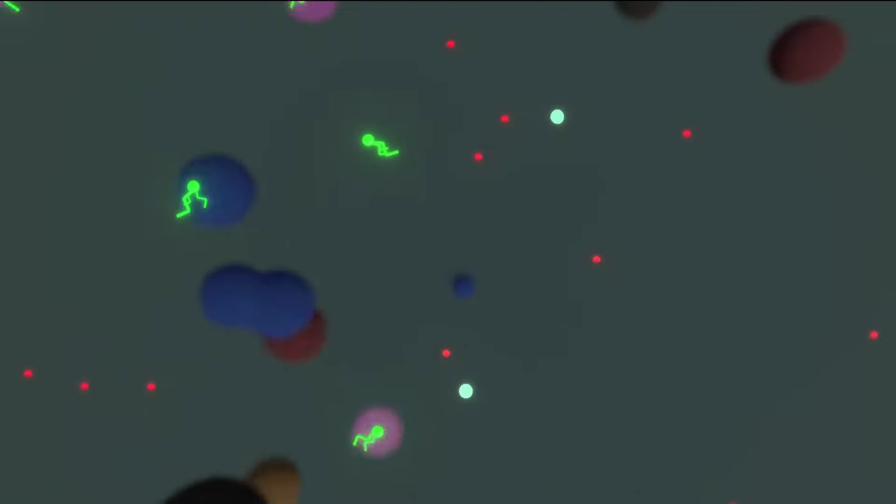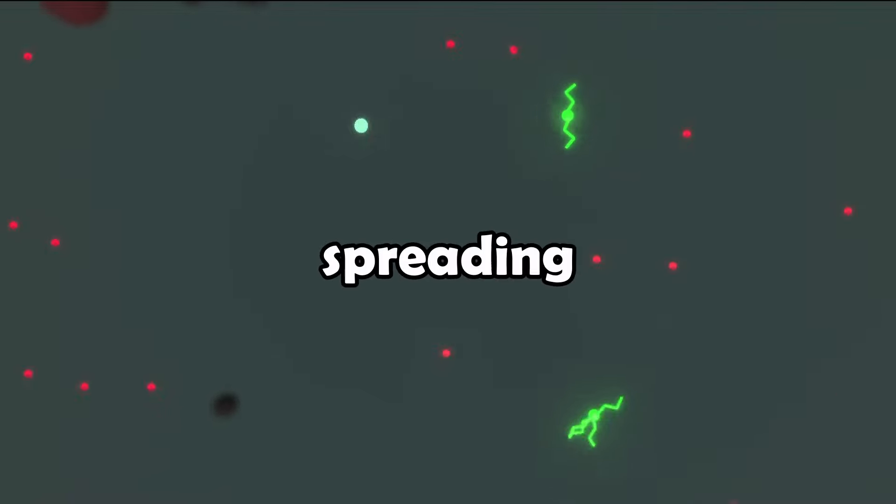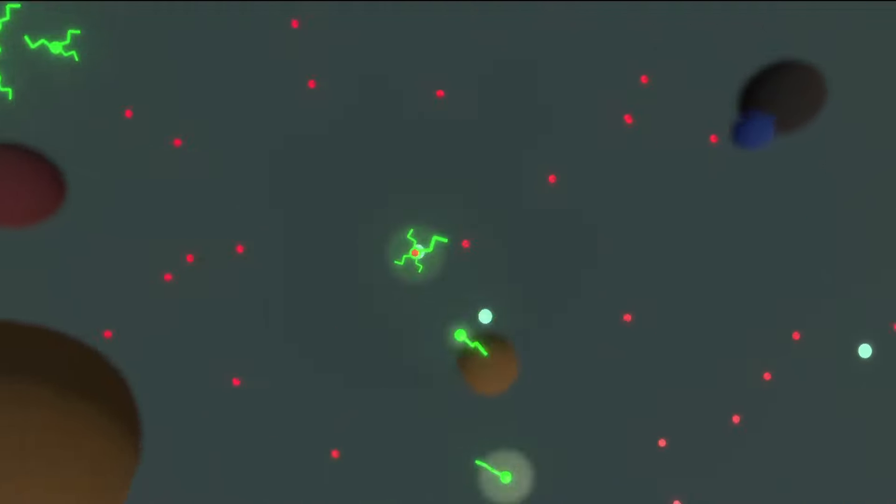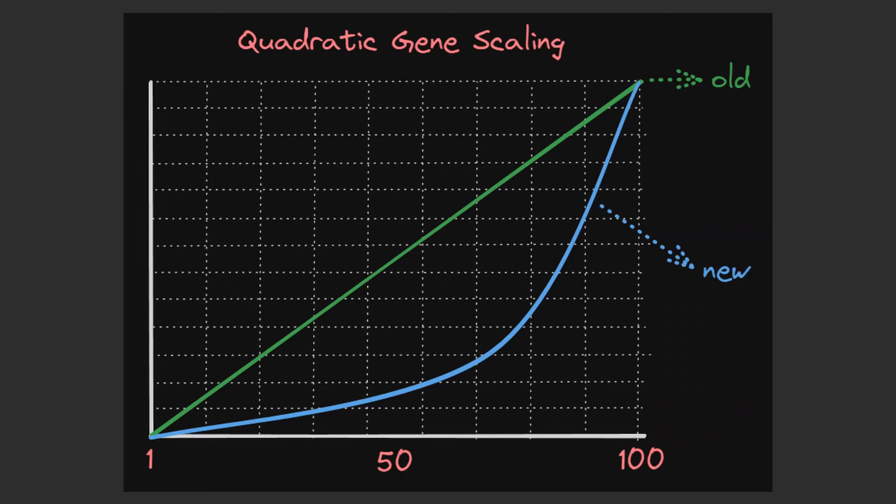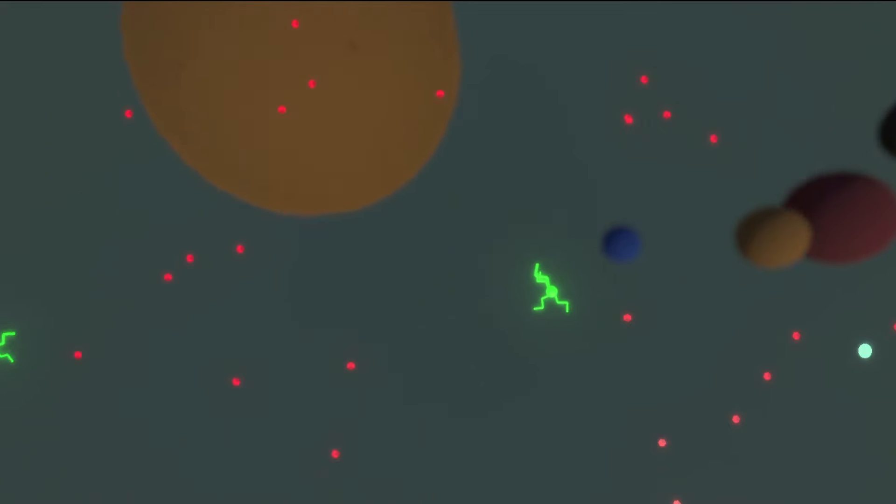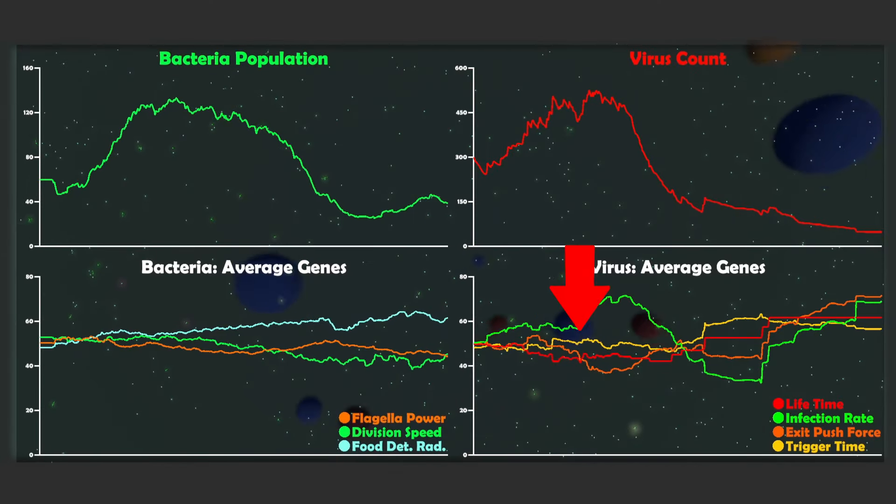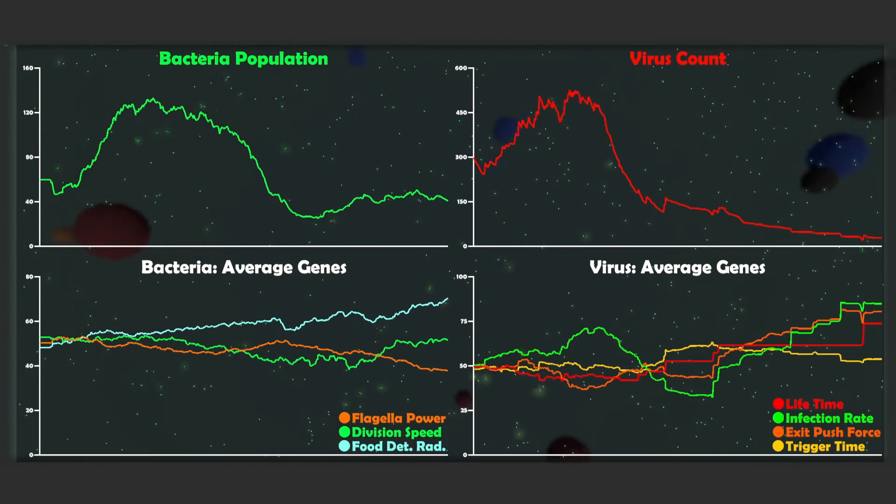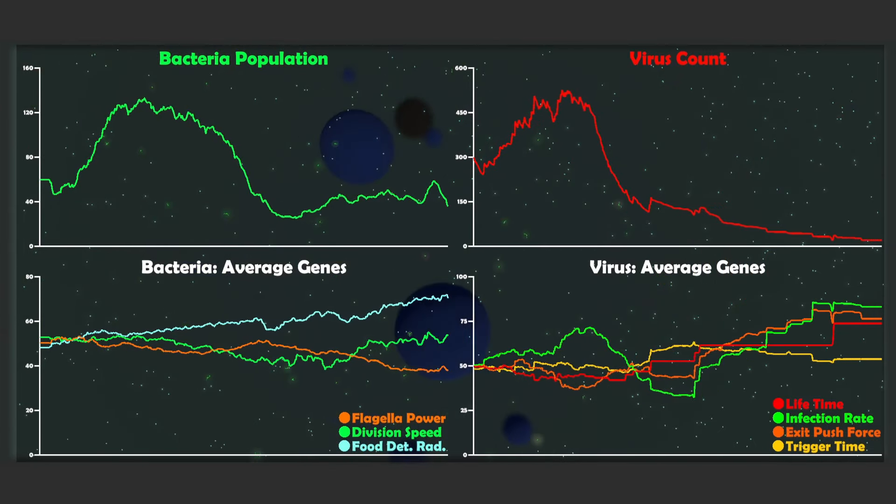I think the issue in the previous runs were that the trigger time wasn't really effective because the virus were spreading way too easily. So the extra time spent in the host was wasted. So that's why now I changed it such that the value of the trigger time gene changes how many new viruses spawn quadratically and not linearly, which means that the higher values will spawn much more bacteria than the lower ones. And as you can see that in this run, the trigger time gene clearly picked up in importance. And I think the simulation looks good now since every gene is moving around and they have a purpose.